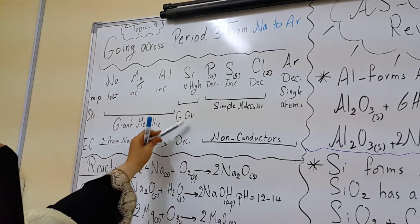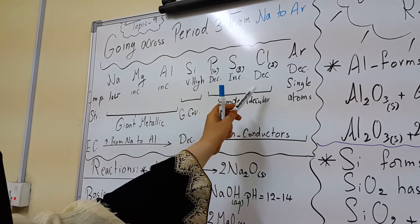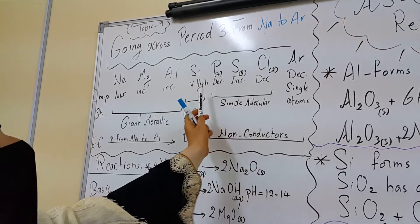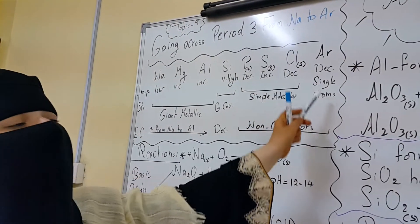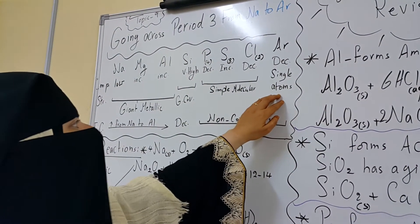Now in silicon we find a giant covalent structure with a very high melting point. Then we go to phosphorus, silicon and phosphorus, sulfur, chlorine and argon where the structure becomes simple molecular for phosphorus, sulfur and chlorine, and very simple in argon as it exists as single atoms.